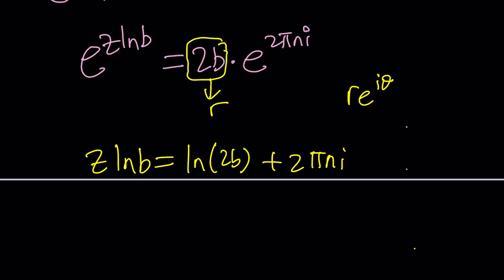It's going to give us Z ln B equals ln 2B plus 2πni. How do you solve for Z? Easy, divide by ln B. ln B is well-defined.